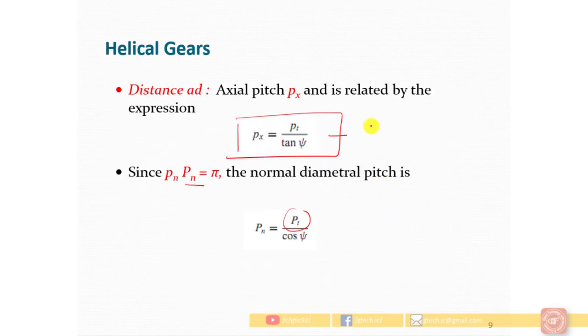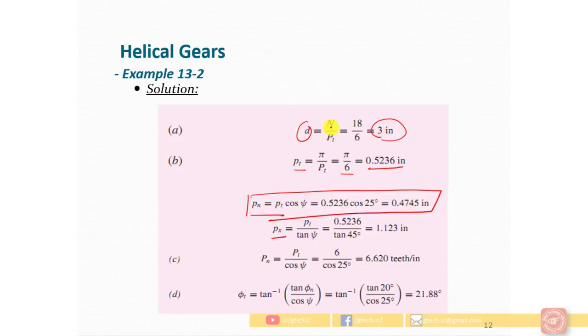Next, the axial pitch is the transverse pitch divided by tan of ψ. So PT is 0.523 divided by tan of 25 degrees, which gives us 1.123 inches.